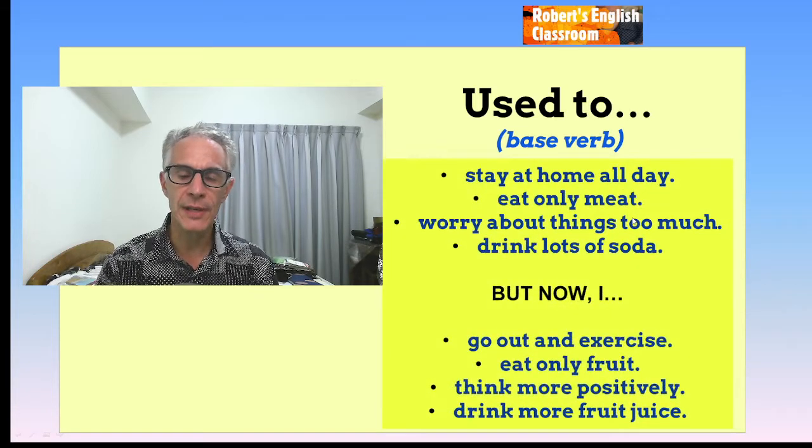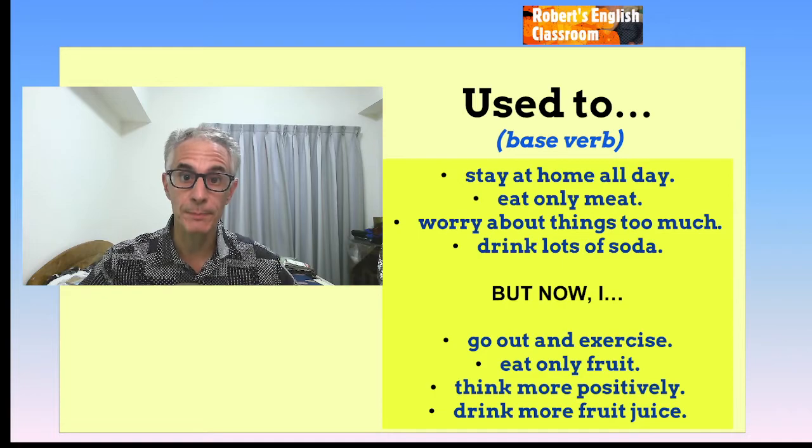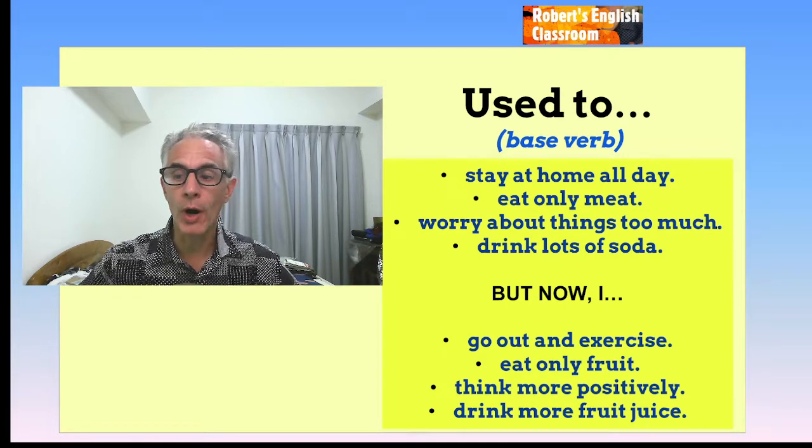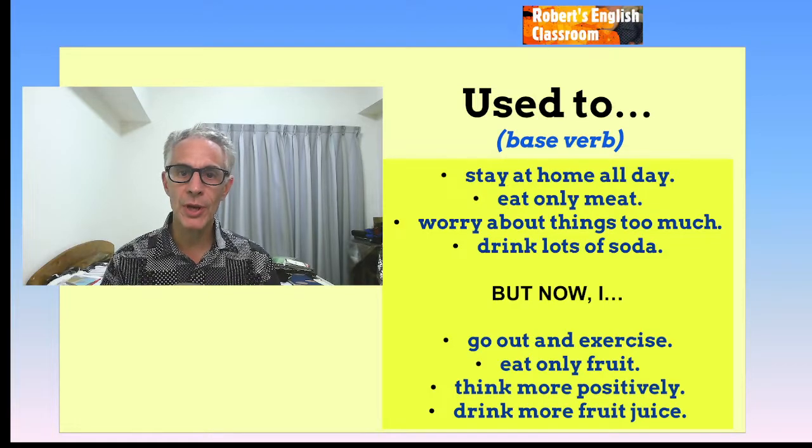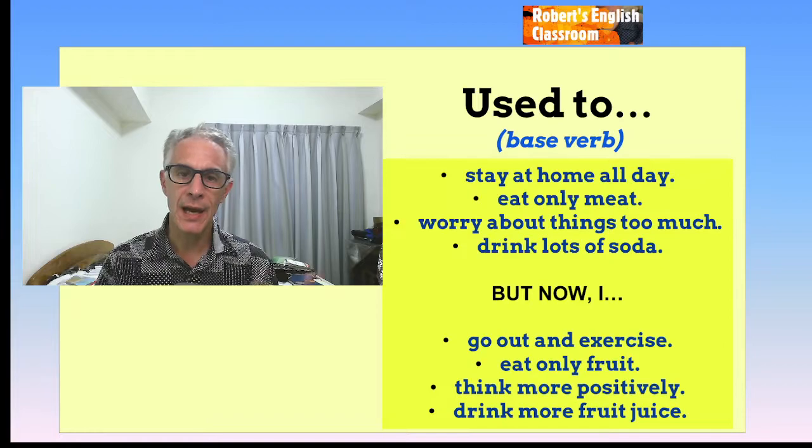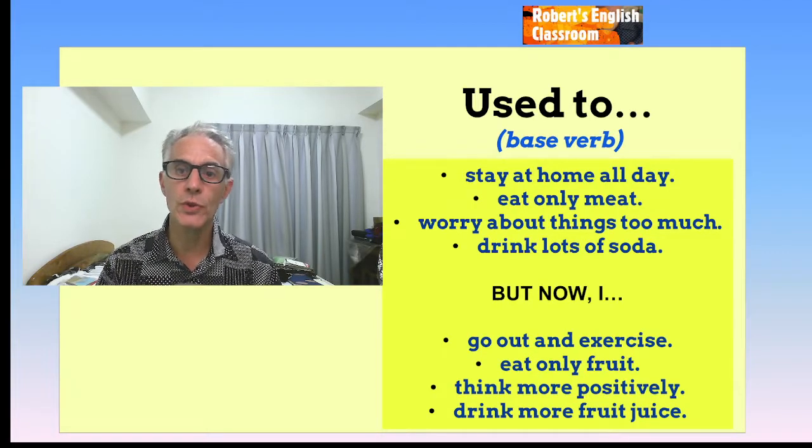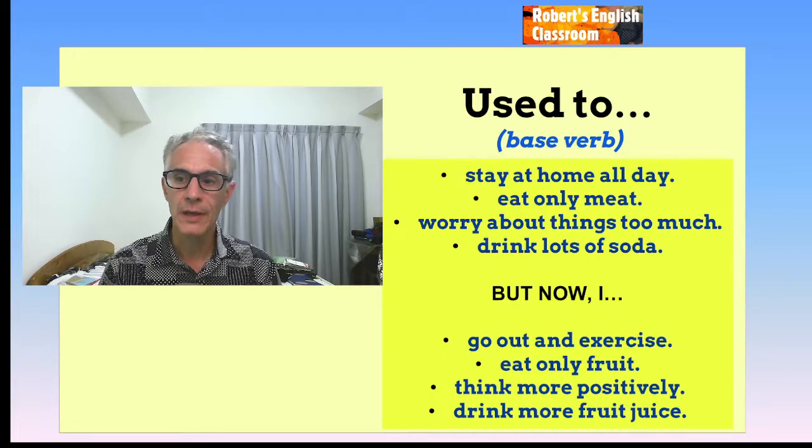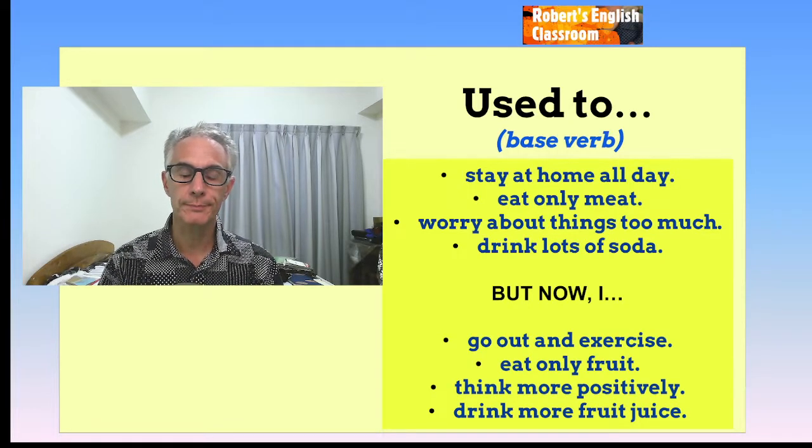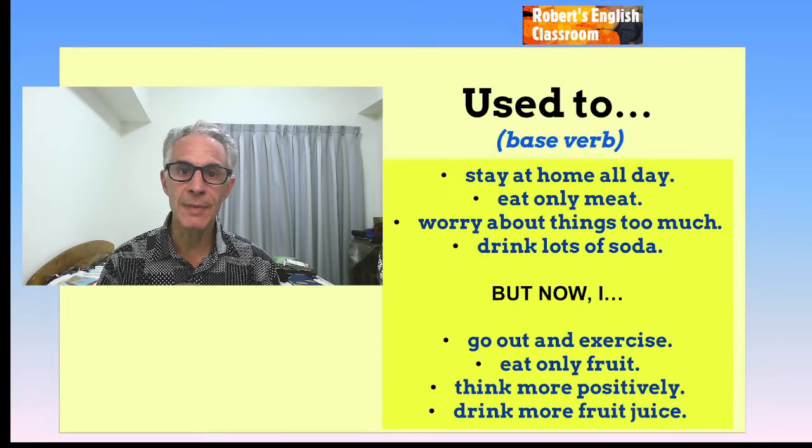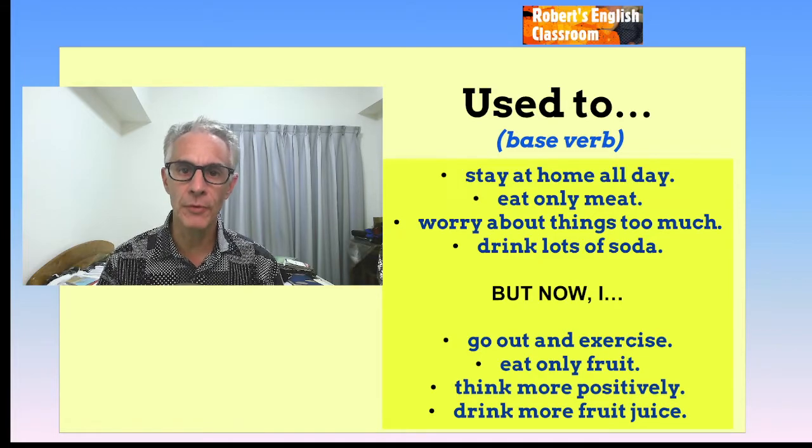Now, how do we use this? Let me give you some examples. Let's look at the first one here. Stay at home all day. Stay is a base verb. I used to stay at home all day. That's before. But now, I go out and exercise. Maybe before, I'm a couch potato. I stay home all day. I don't like to go outside. But I've changed. Now, I like to exercise and be outside. Next one. Eat only meat. I used to eat only meat. Very strange. But now, I eat only fruit. Before, I ate meat. Only meat. But then, I changed. And now, only fruit. Next one. Worry. I used to worry about things too much. Nervous. Anxiety. But now, I think more positively. I used to think too much. Now, I think more positively. And the last one. Drink. I used to drink lots of soda. Maybe it's not very healthy for you. I used to drink lots of soda. But now, I drink more fruit juice. Instead. Probably a healthier choice for you.